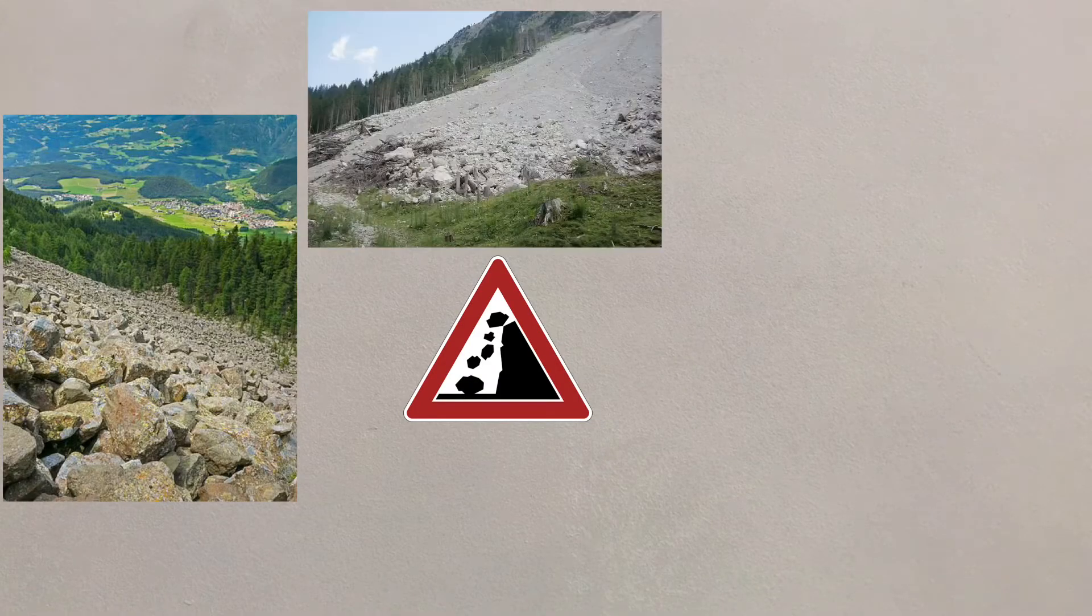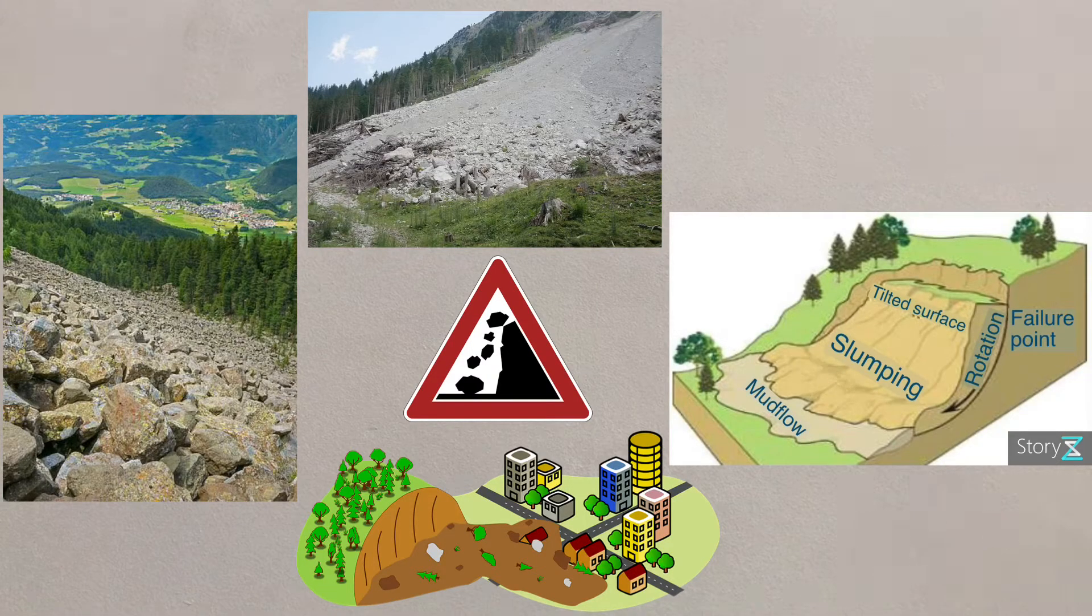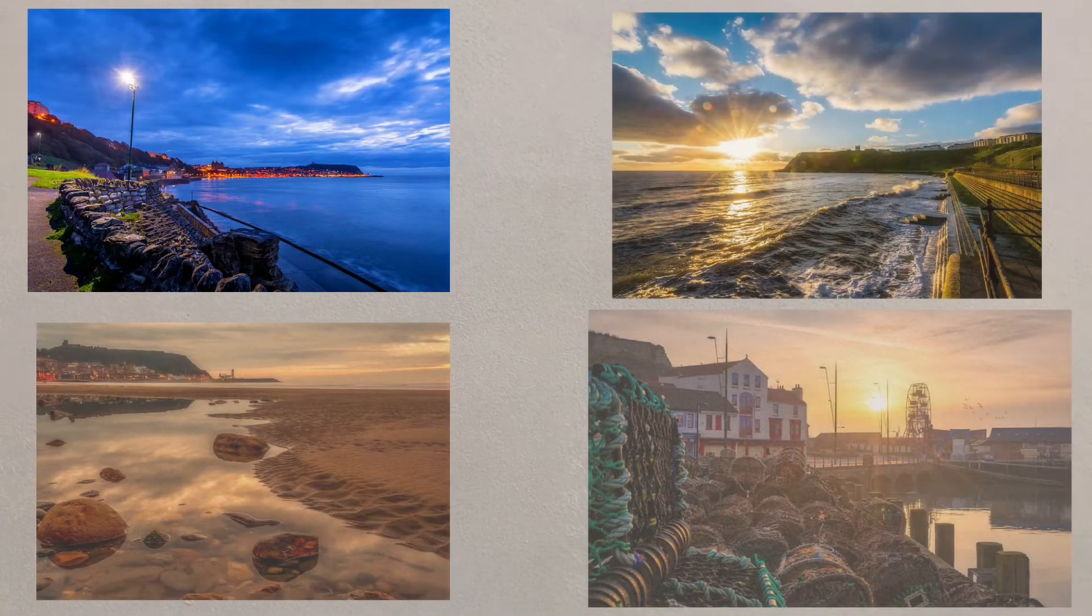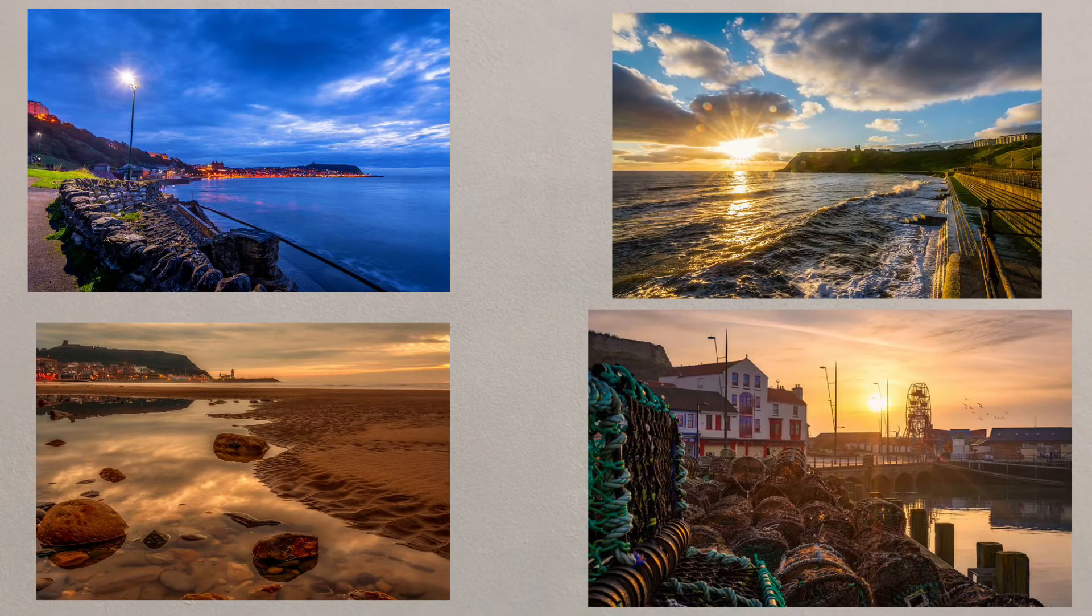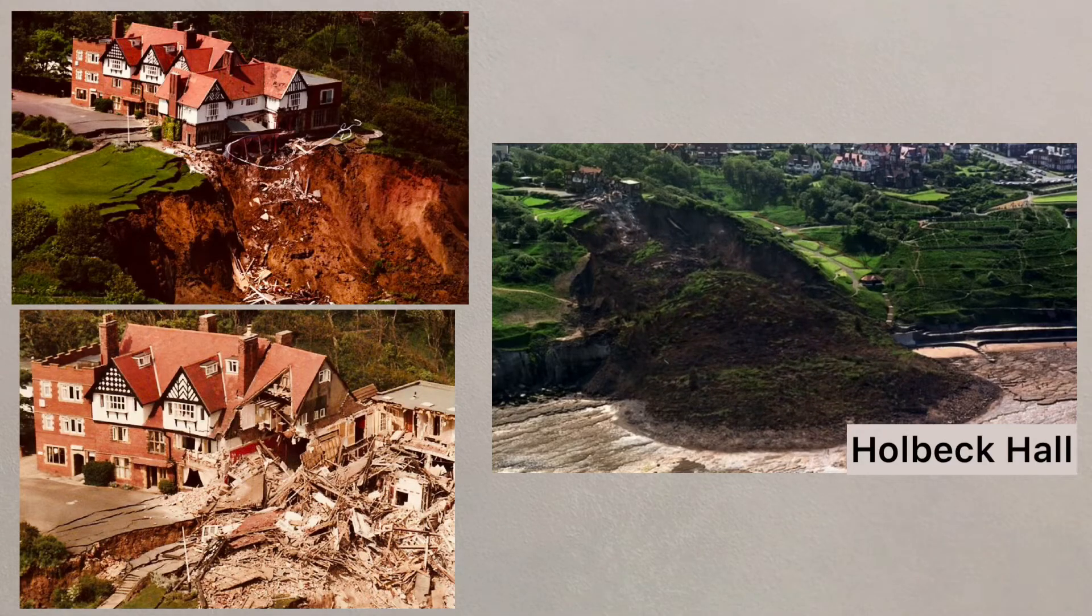Rock falls, landslides, mud flows, and rotational slip are all forms of mass movement. A great example of this happened in Scarborough on the North Yorkshire coast in 1993, where Holbeck Hall Hotel collapsed as the cliff it was on slipped onto the beach below.